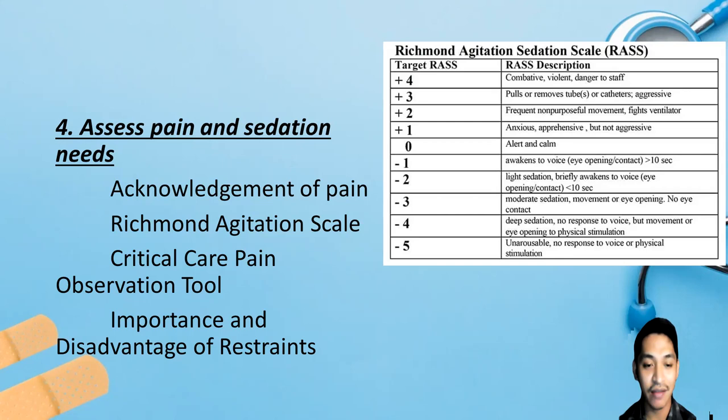A frequently asked question is: should we restrain an agitated ventilator patient to prevent self-extubation? Research shows that self-extubation can occur despite physical restraints. It is best to treat agitation and anxiety with medication and non-pharmacologic methods such as communication, touch, presence of family members, music, guided imagery, and distraction.